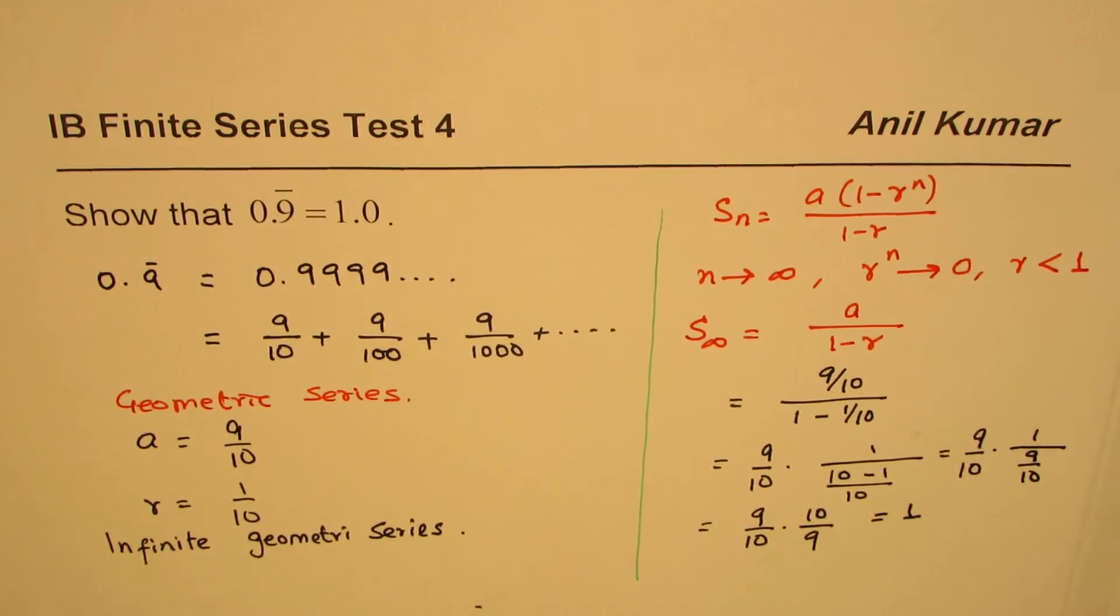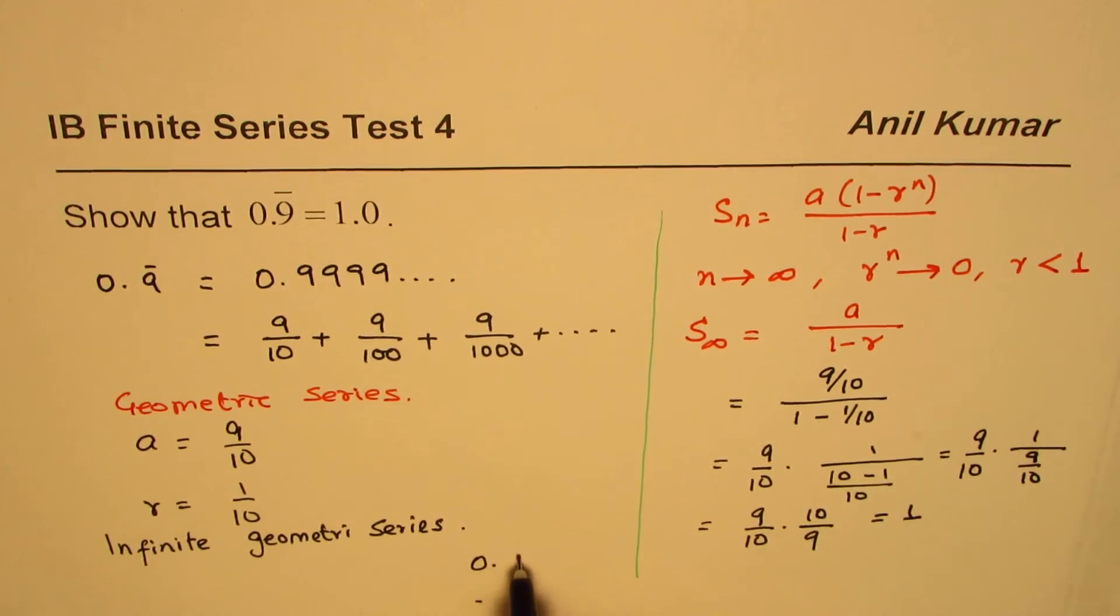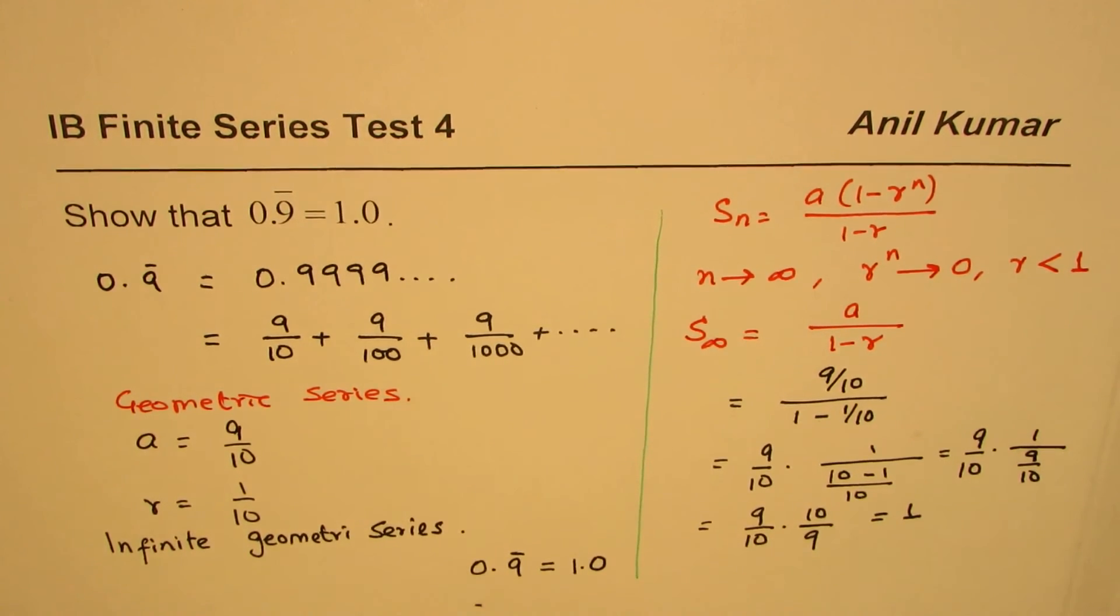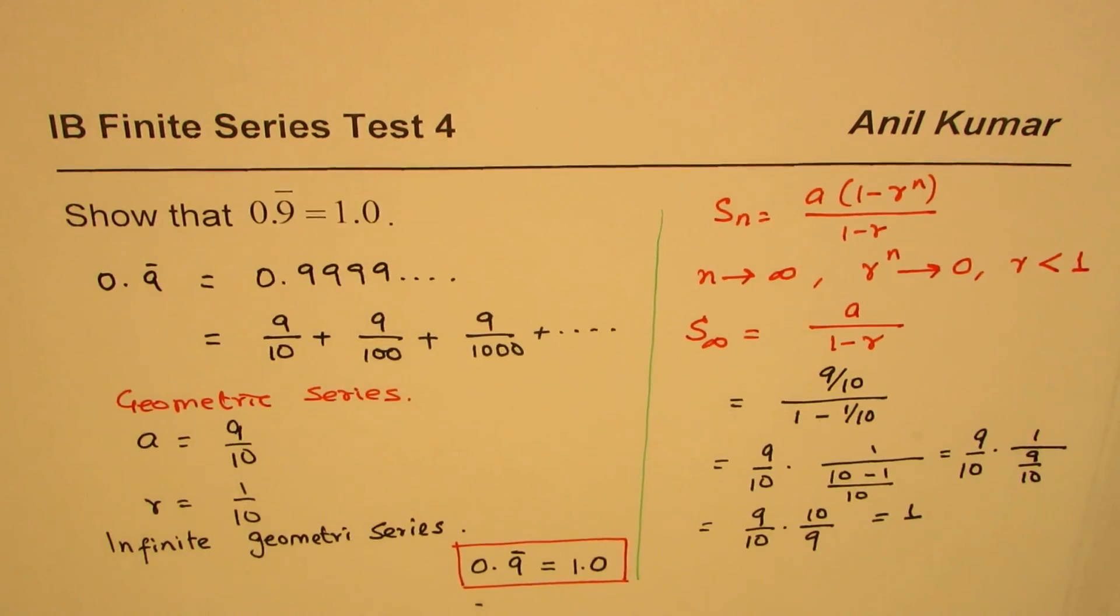So it is exactly equal to 1, and therefore we can say 0.9 recurring is indeed equal to 1.0. You see that? So that is how you can prove it. I hope this is absolutely clear. Thank you and all the best.